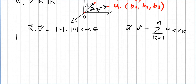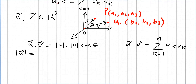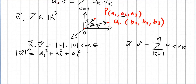The absolute value of u is the square root of a1 squared plus a2 squared plus a3 squared. And the same for vector v, which is the square root of b1 squared plus b2 squared plus b3 squared.